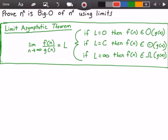Now this theorem states that if we have the limit as n approaches infinity of some function that we call f of n divided by another function that we call g of n and it equals some limit that we're going to call L, then we can check one of three cases.